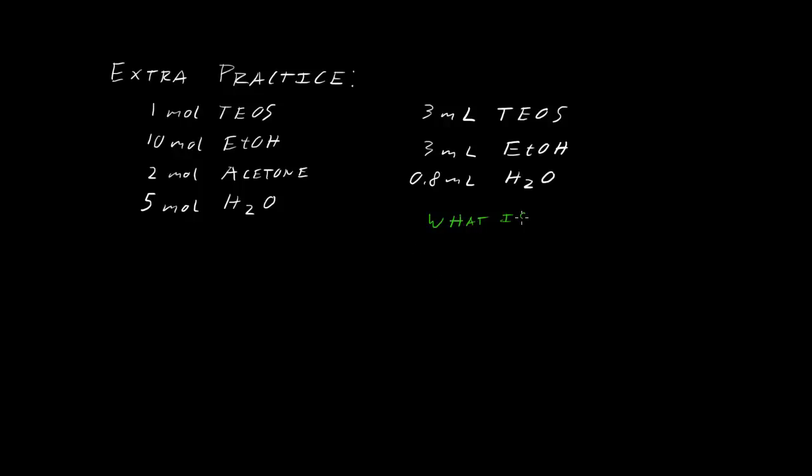Let's look at some extra practice as the final thing for today. If you were to take one mole of TEOS, 10 moles of ethanol, and two moles of acetone this time, and combine that with five moles of water, what will your final silica density be? Find what your silica density will be and your percent porosity. Then as an extra exercise, now take milliliters. Three milliliters of TEOS, three milliliters of ethanol, 0.8 milliliters of water. Do the same thing with that. One thing to be careful of, look at the stoichiometry on this when you finally convert it into moles. What is the molar ratio of water to TEOS in this recipe on the right? It's not four.